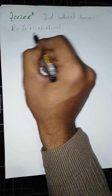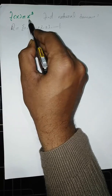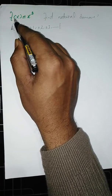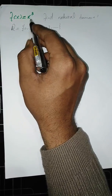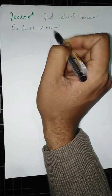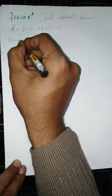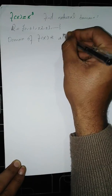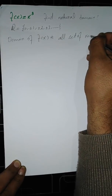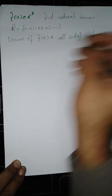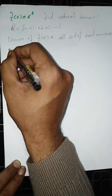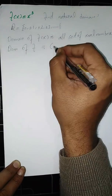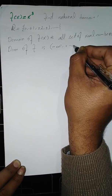There is no number in the set of real numbers that makes our expression undefined or complex. That's why we say that f of x equals x cubed has a natural domain of all real numbers. The domain of f is from minus infinity to positive infinity.